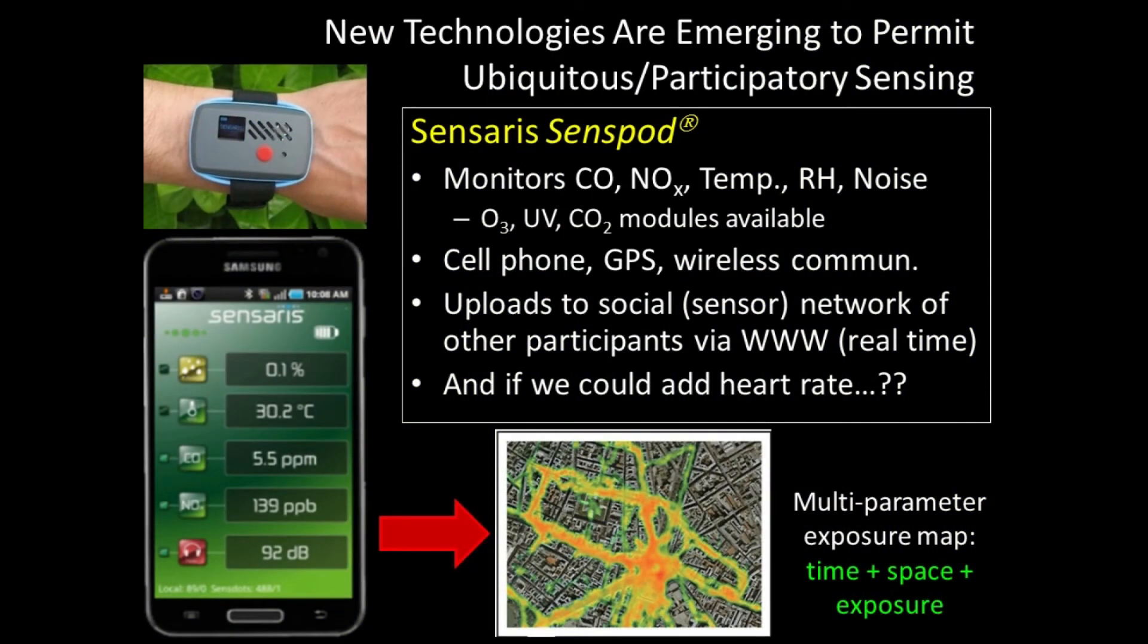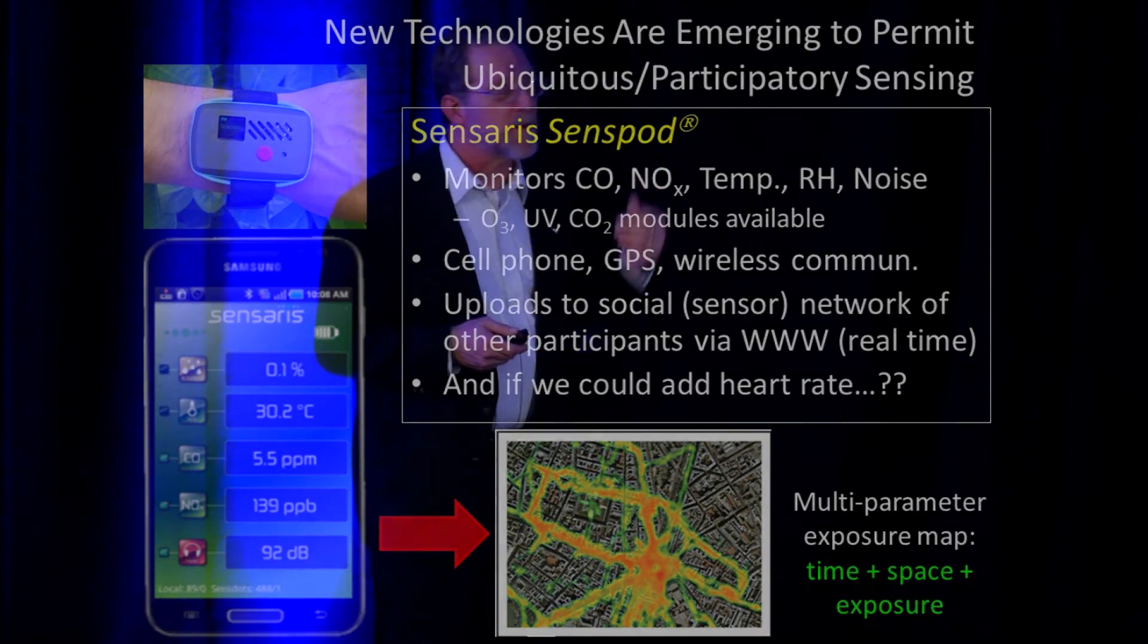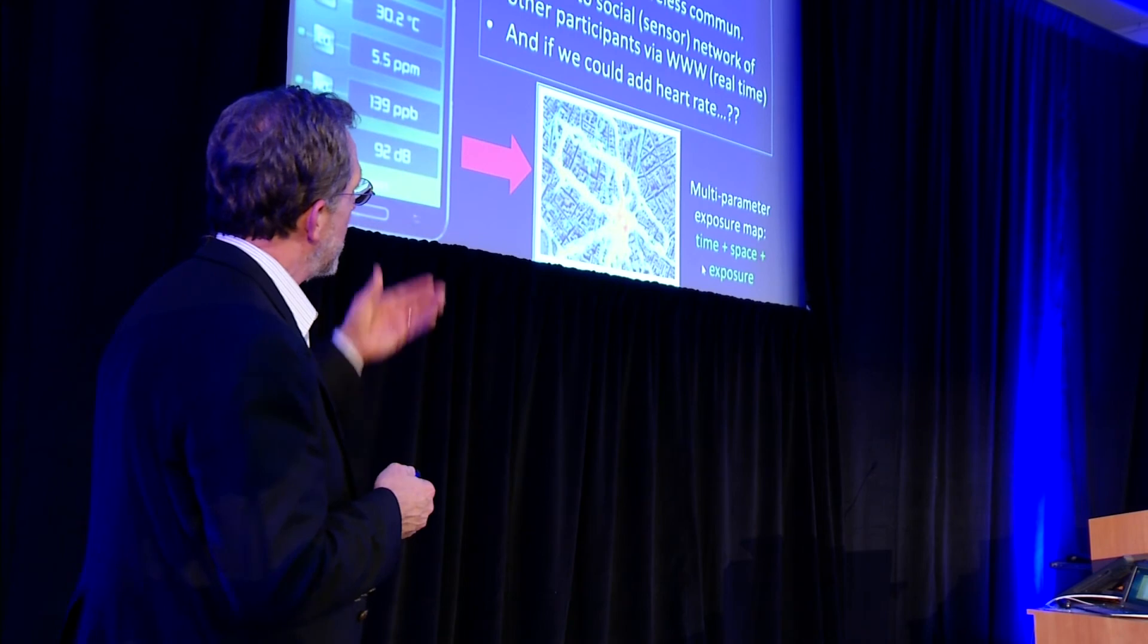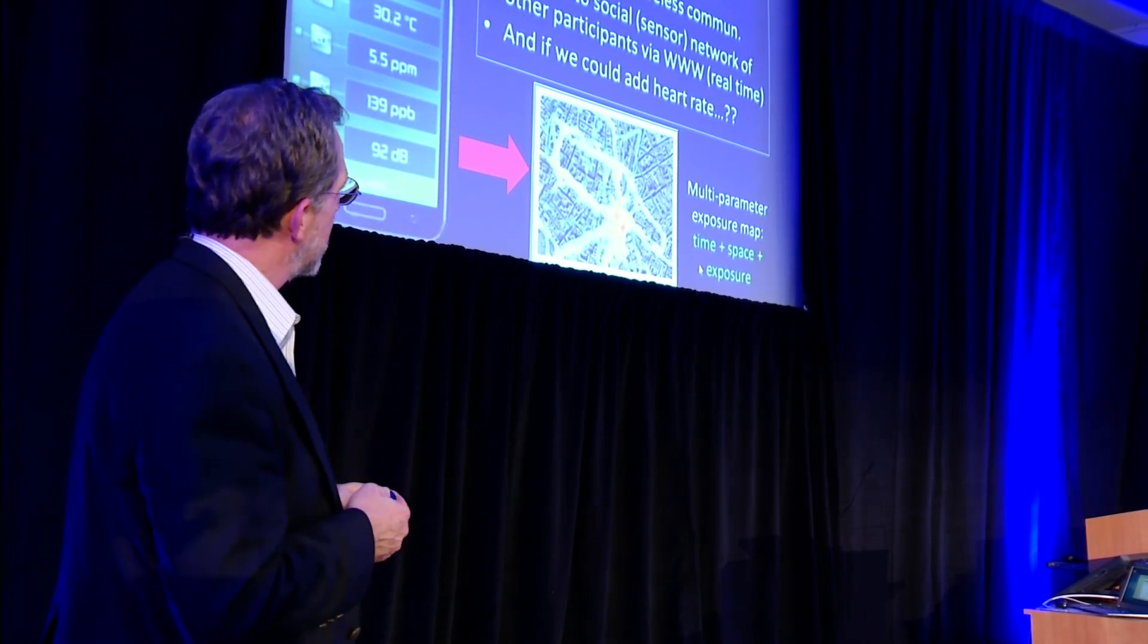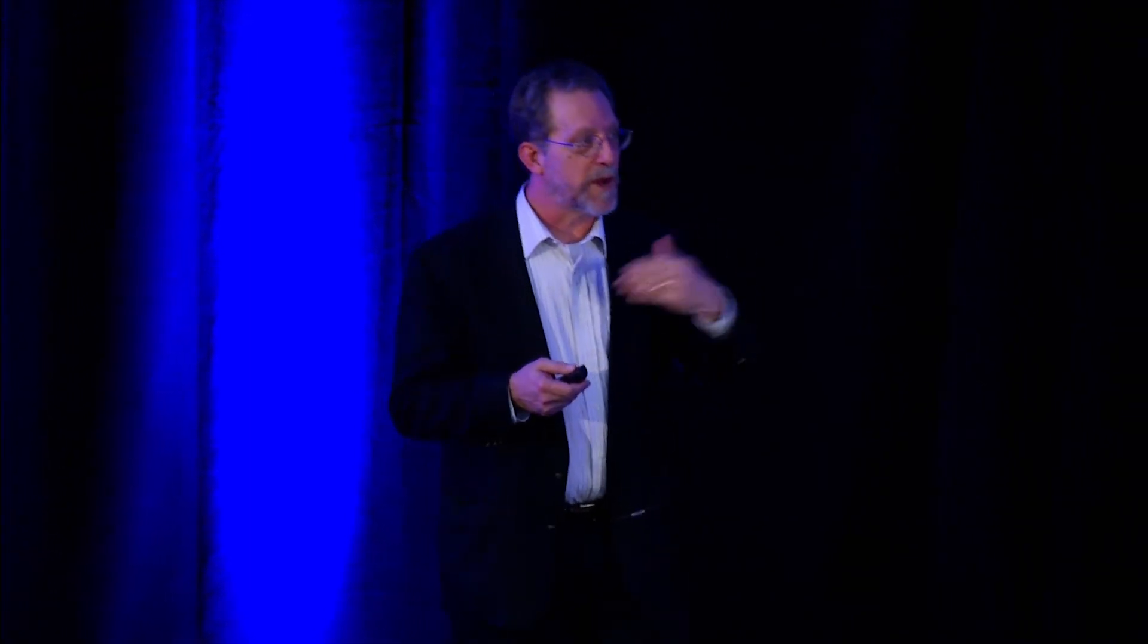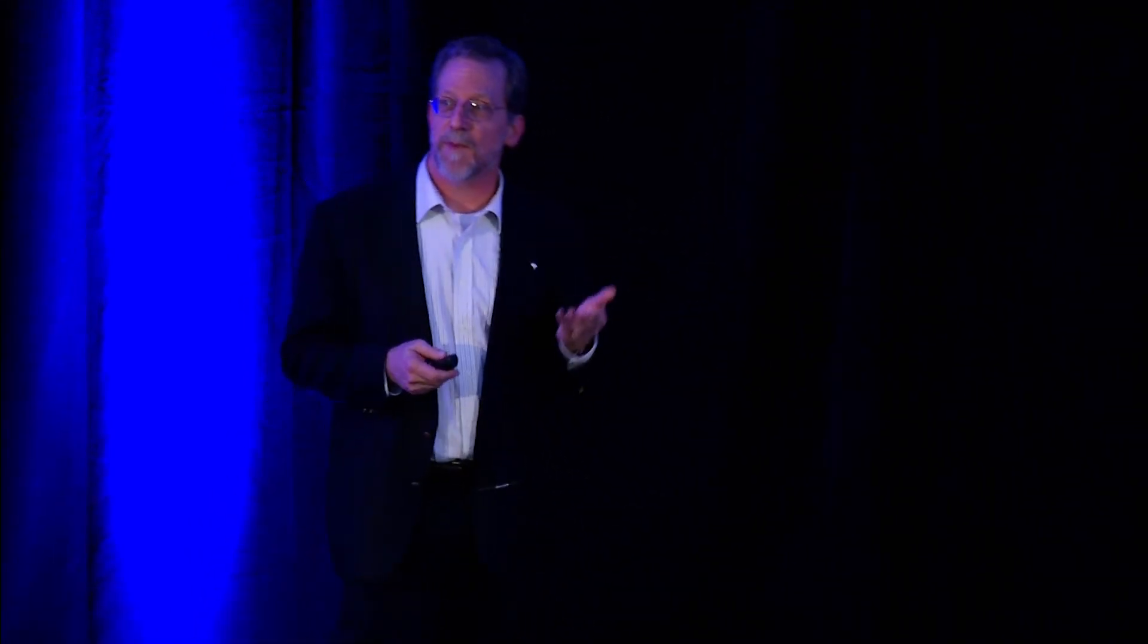So this company, Sinceris, has produced a series of devices called SensePods and you're seeing them on the upper left there on the wrist of a person. It contains a modular set of chemical sensors and sensors for physical quantities like temperature, humidity, and noise. They have other modules available. And they have a cell phone app that allows the data to be downloaded and then uploaded to the web for sharing with other people and create basically a network of sensory information. So you can get a multi-parameter exposure map such as shown conceptually right there of time, space, and exposure to a bunch of chemicals. And what if we could add heart rate? People are working now on personal heart rate monitors or respiration monitors to add that element to the exposure assessment tool. Fantastic, right?